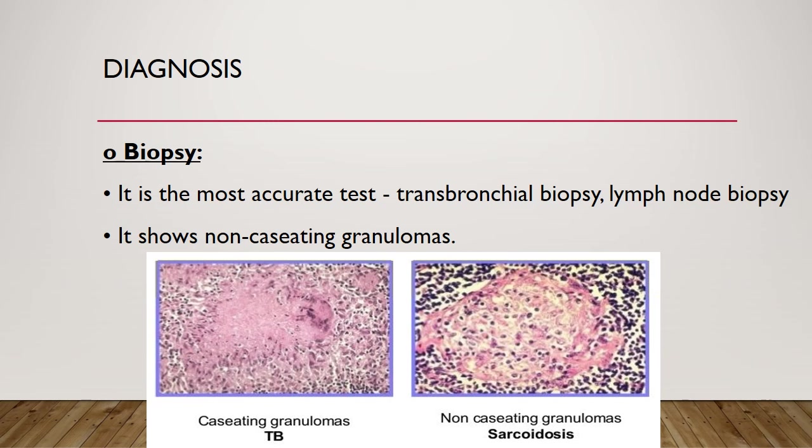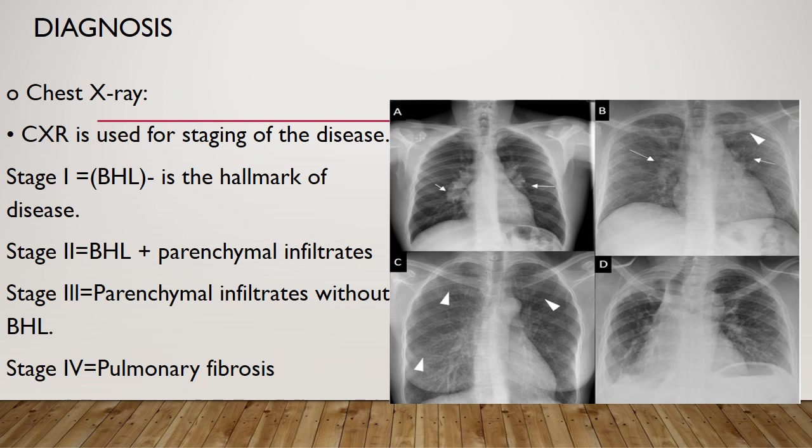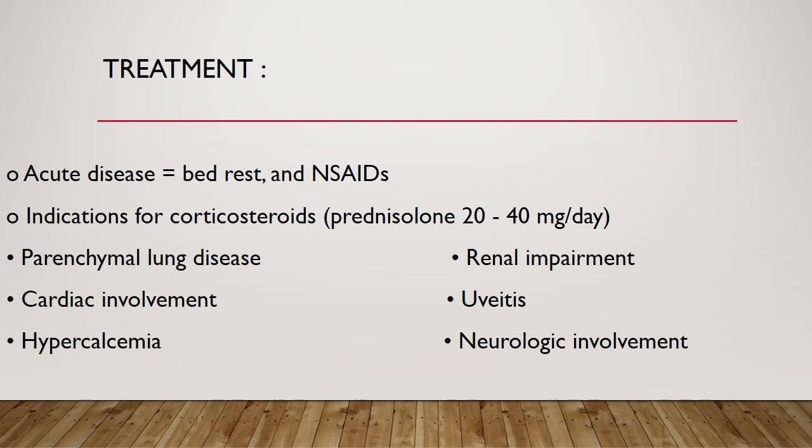There are four stages of sarcoidosis seen on chest radiograph. Stage 1 is bilateral hilar lymphadenopathy, the hallmark of the disease, shown in picture A. Stage 2 includes bilateral hilar lymphadenopathy along with parenchymal infiltrates, as seen in picture B. Stage 3 includes parenchymal infiltrates without lymphadenopathy, as shown in picture C. Stage 4 includes pulmonary fibrosis, as shown in picture D.